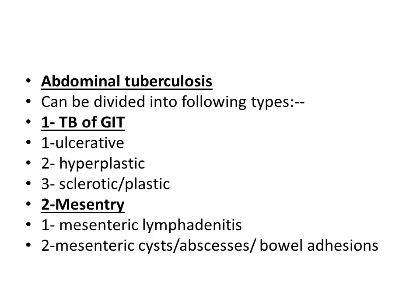Abdominal Tuberculosis can be divided into the following types. Tuberculosis of the gastrointestinal tract, which may be of three types: ulcerative, hyperplastic, and sclerotic or plastic type. Sometimes there may be a combination of ulcerative and hyperplastic types. In the mesentery it may present as mesenteric lymphadenitis, mesenteric cysts, abscesses, or bowel adhesions.